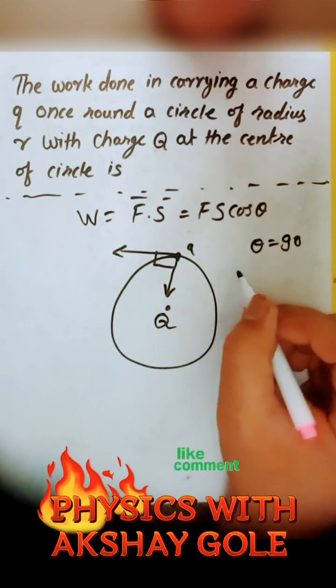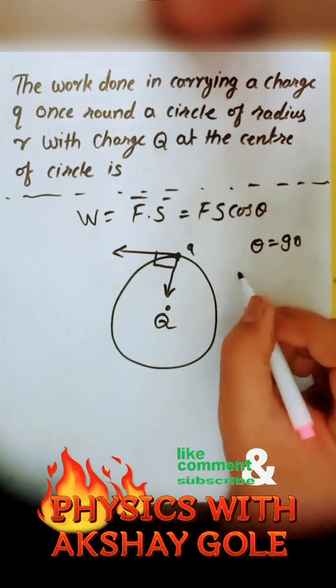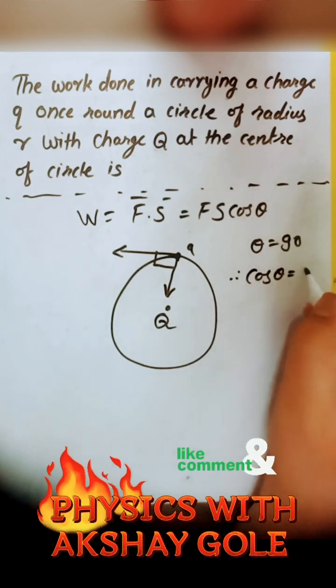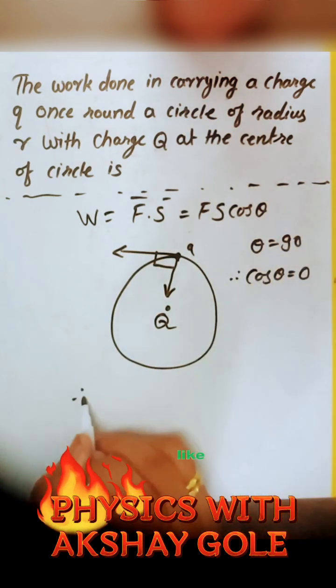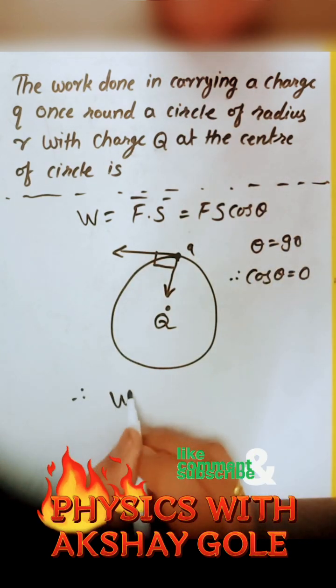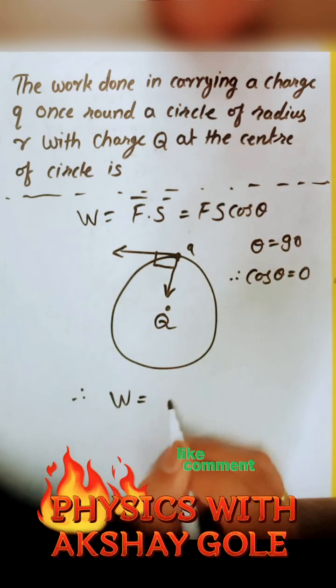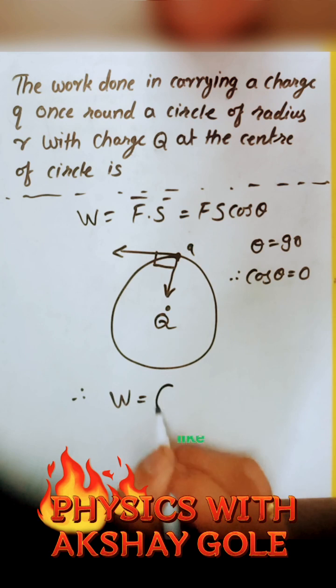Since theta is equal to 90 degrees, cos 90° equals zero, therefore the work done is equal to zero.